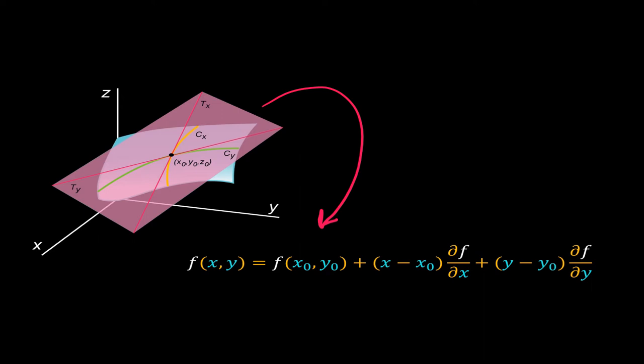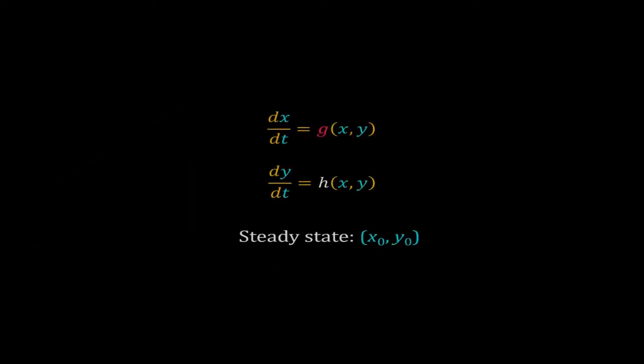Now, let's get back to the system of ODEs. Suppose we have a nonlinear system of ODEs of two dependent variables. dx dt is equal to G of X, Y and dy dt equal to H of X and Y. G and H are two functions. As it is a nonlinear system, it can have more than one steady state. Suppose X0, Y0 is one of those possible steady states.